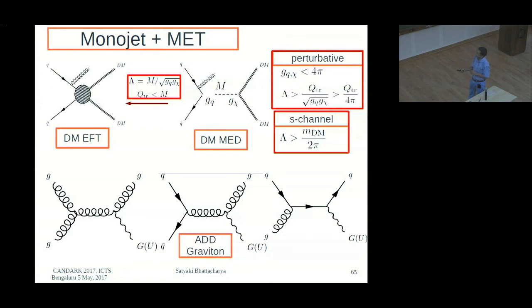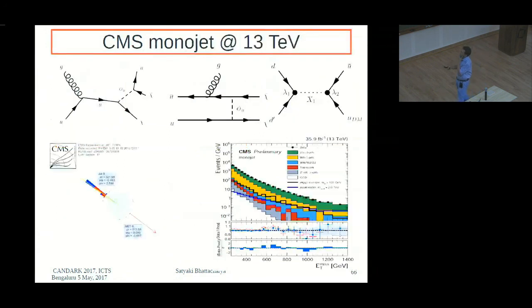Then CMS did a Higgs plus dark matter type search also where you consider two different models. One is some heavy vector mediator going to Higgs and then chi chi bar, dark matter pair. And then another one where you have a Higgs radiating from the heavy mediator and the dark matter pair. One looks for excess in the missing transverse momentum spectrum and the Higgs is tagged by its diphoton decay and nothing observed there.